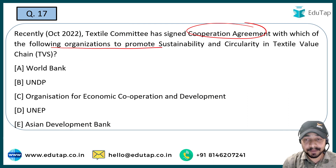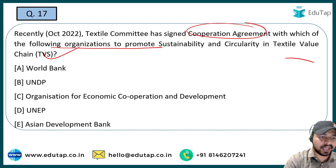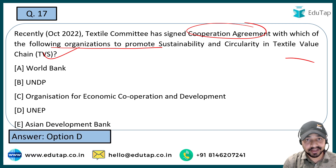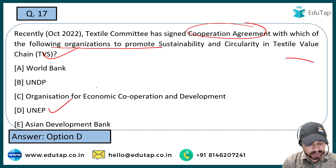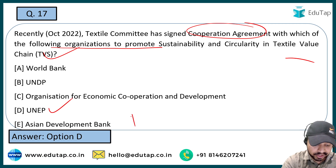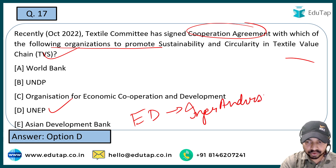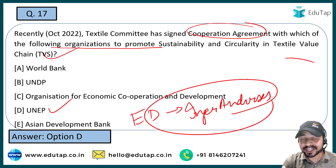The next question: the Textile Committee has recently signed a cooperation agreement with which of the following organizations to promote sustainability and circularity in the textile value chain? The right answer is the United Nations Environment Programme — UNEP. UNEP's executive director is Inger Andersen, which you should remember from the exam point of view.